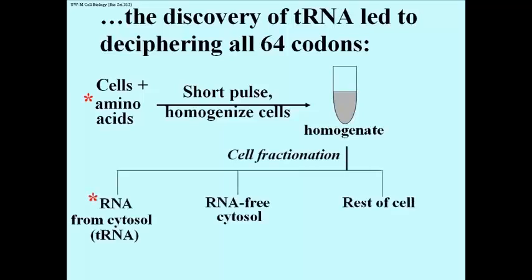and then fractionated the cell into RNA from the cytosol, RNA-free cytosol, and whatever was left of the cell — it turned out that the radioactivity, which was radioactive amino acids, was not found where you would have expected it. They weren't in the RNA-free cytosol. Instead, most of the radioactivity was associated with an RNA fraction from the cytosol, the one we know as transfer RNA.